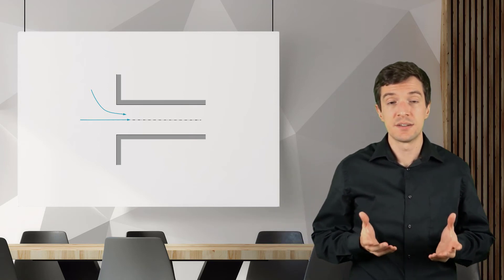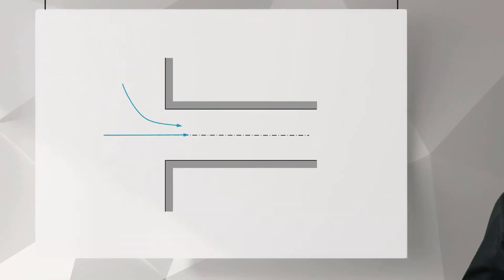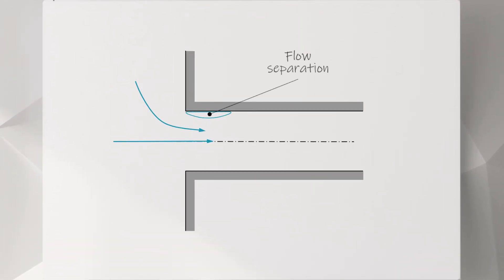When the entrance region presents sharp corners, flow separation would likely to occur, because the flow momentum will not let the flow perform such a sharp turn.